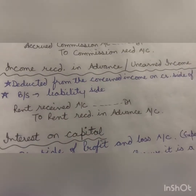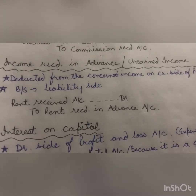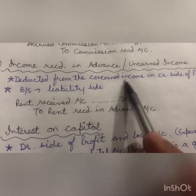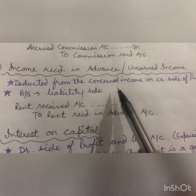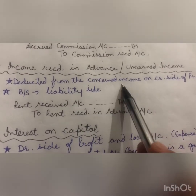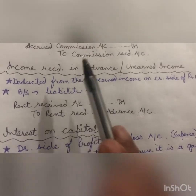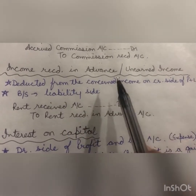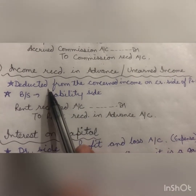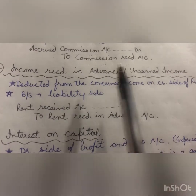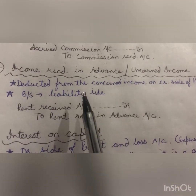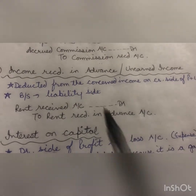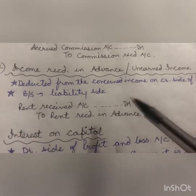This is unearned income — we have not yet earned it, we have only received it. Since this income does not belong to this year, we will deduct it from the concerned income account, whether it is commission received, rent received, or any other income account. The reason is that this advance income is not of this year. It will be deducted on the credit side of P&L from the concerned income account, and since the firm has not earned it yet, it is a liability of the firm.